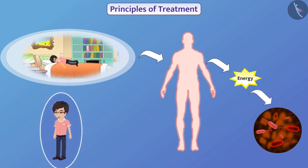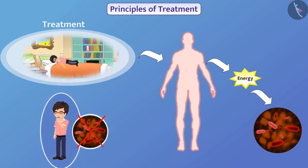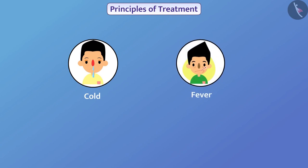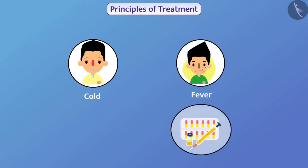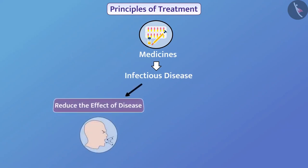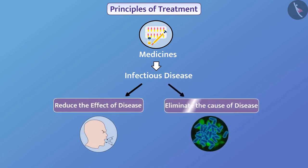Care taken to make the patient disease-free is called treatment. Some diseases, like cold, are cured without taking medicines. But some diseases are cured only after taking medicines. There are two ways of treating infectious diseases using medicines: the first way is to reduce the effect of the disease, and the second is to eliminate the cause of the disease.